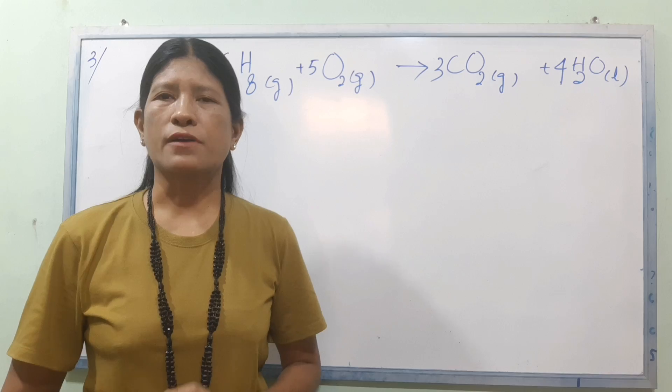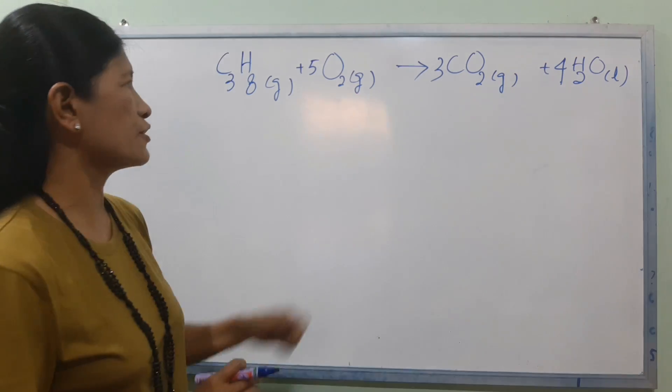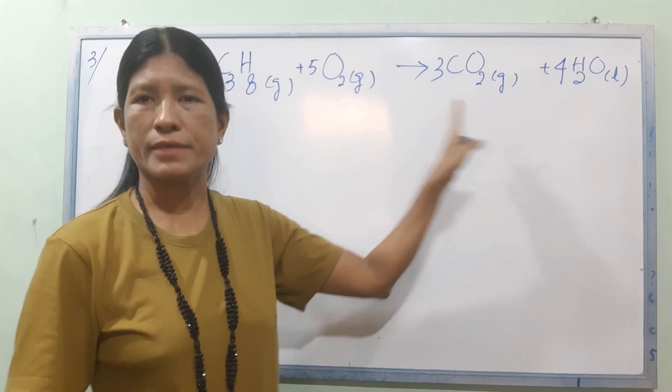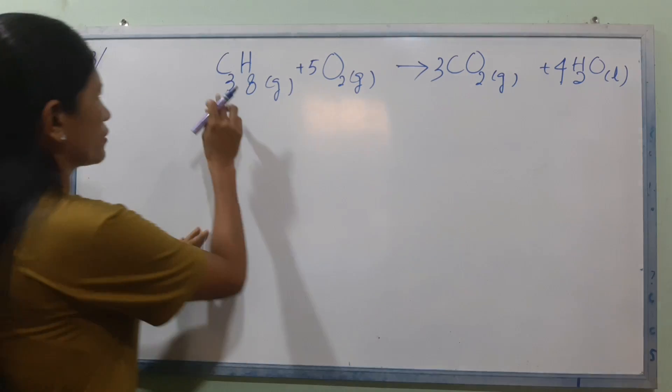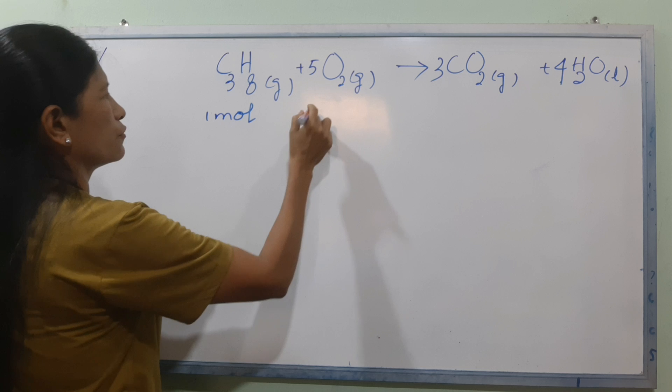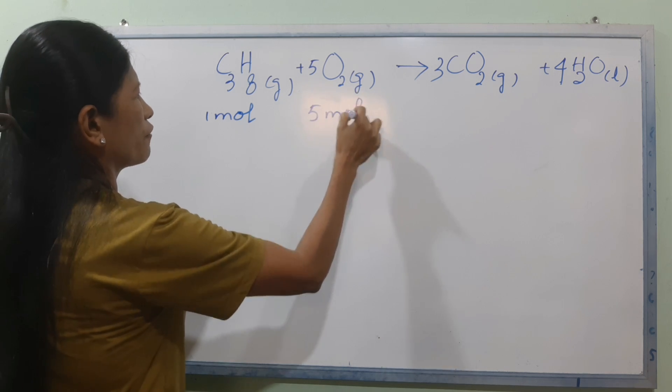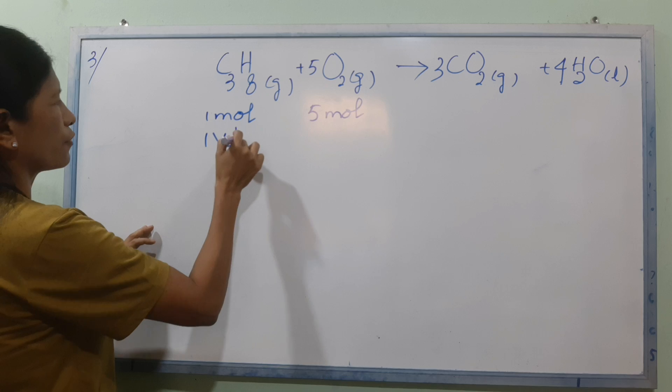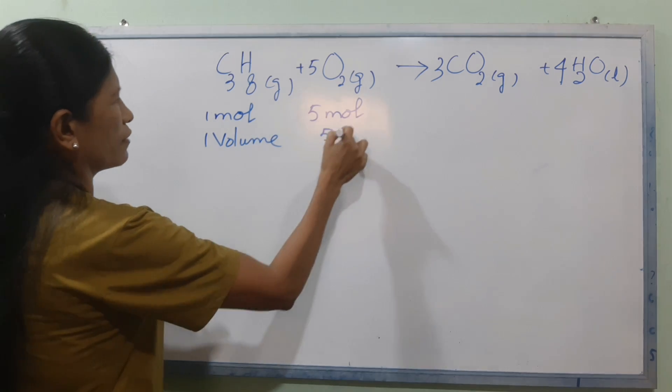The equation is C3H8 plus 5O2 gives 3CO2 plus 4H2O. In this case, we will use C3H8 with oxygen, 5 molecules. Gas molecules use 1 volume to 5 volume.